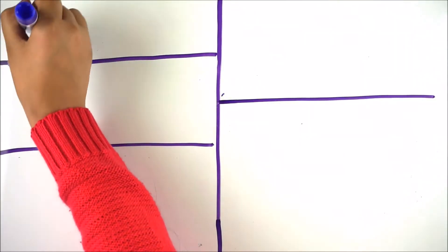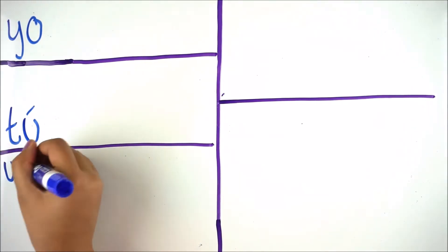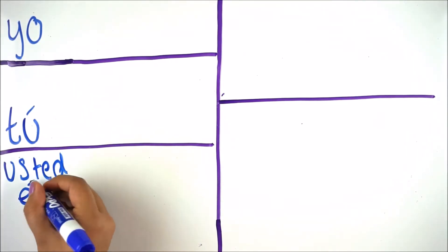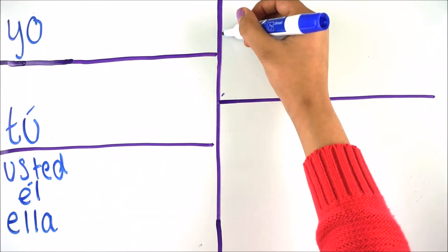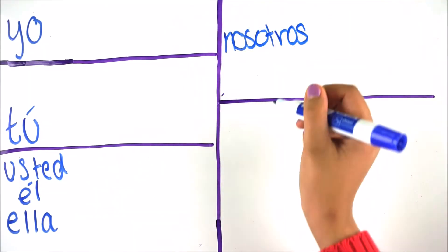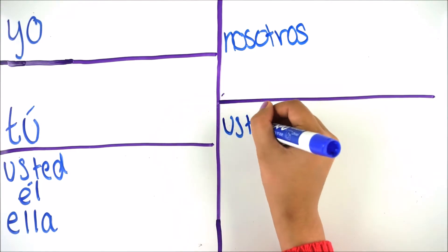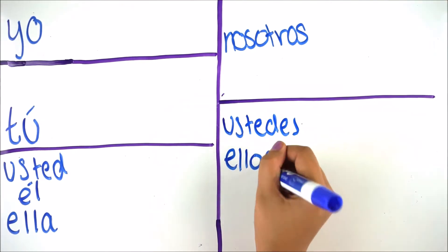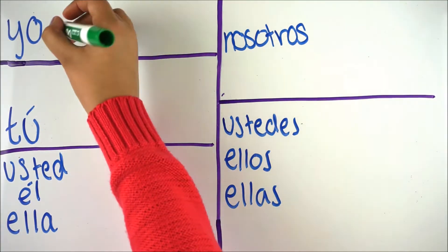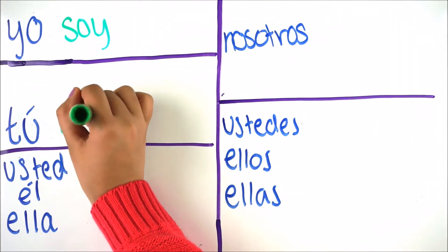The subject pronouns include: yo, tú, usted, él, ella, nosotros, ellos, ustedes, ellos, and ellas. On the left we have the singular and on the right we have the plural.